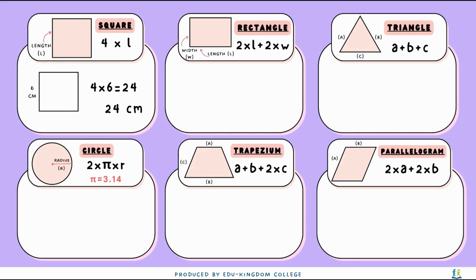Whereas for a rectangle with a width of 3 centimeters and a length of 7 centimeters, to work out the perimeter we have 2 times 3 plus 2 times 7, which gives us 20 centimeters.